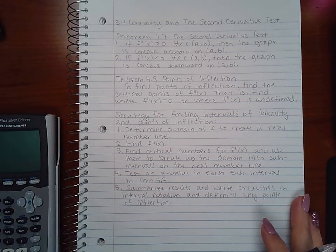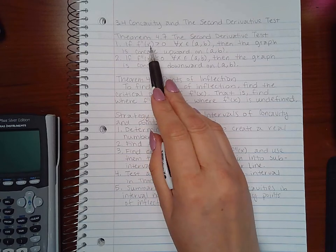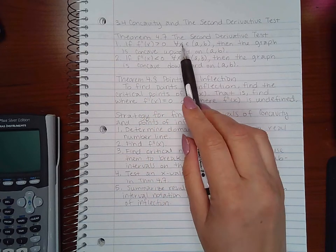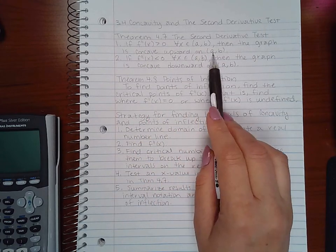So the second derivative test theorem says that if f double prime of x is greater than 0 for all x in AB, then the graph is concave upward on AB.